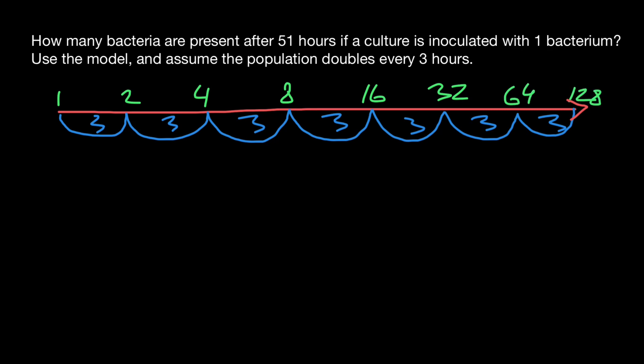We can solve this problem without any formulas, but it's going to be much easier to use formulas, especially if we have large numbers. So here's a formula. Y equals C, and C is the initial number of bacteria. We have one bacteria as initial number times two, because our bacteria is going to double every three hours. So two means double.